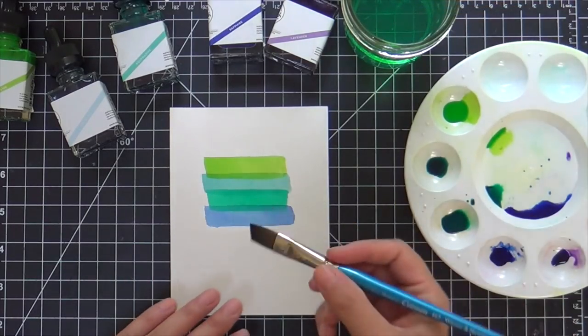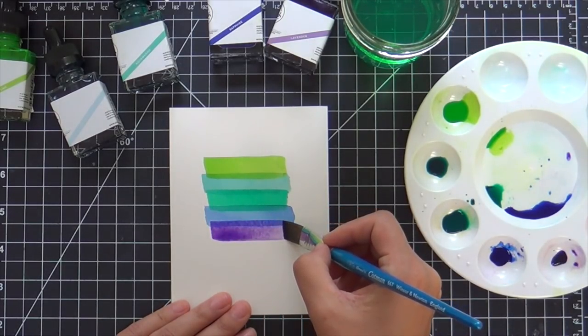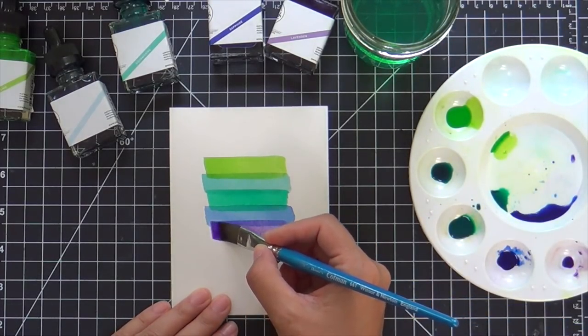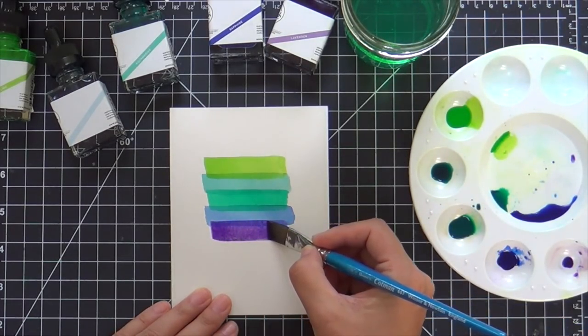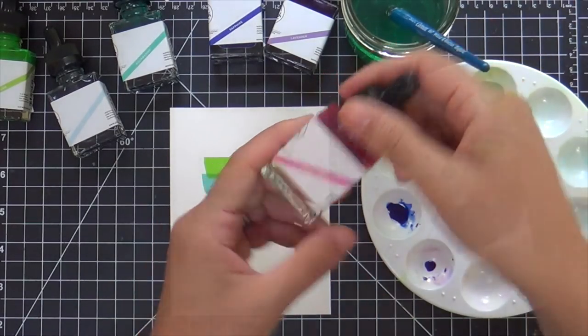This time I'm going in with the lavender, pressing down and swiping it. Doesn't this kind of look like little strips of washi tape? I love how it looks. It's so simple and yet it's so pretty. So I felt like I needed one more color.